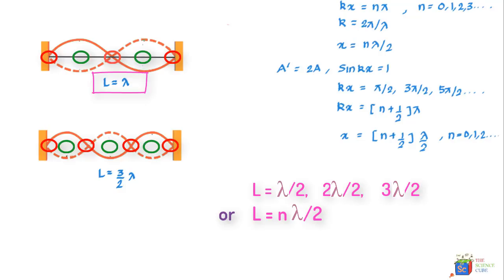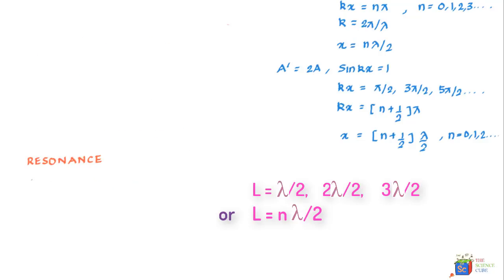So let's put a subheading resonance over here. And as I said we can write lambda is equal to 2L upon N where N is equal to 1, 2, 3 and so on.